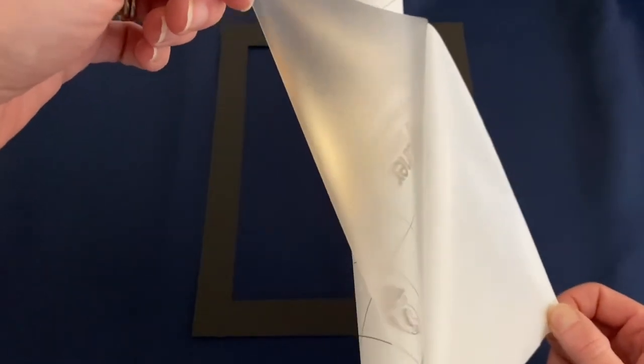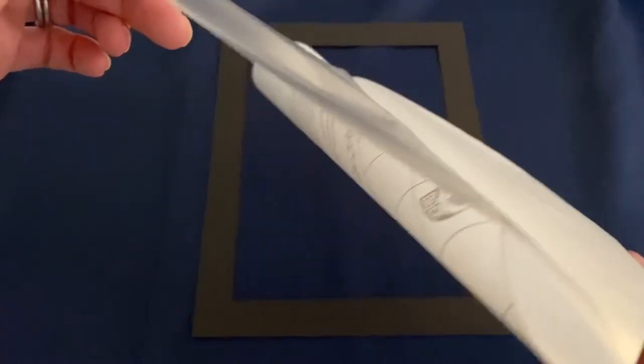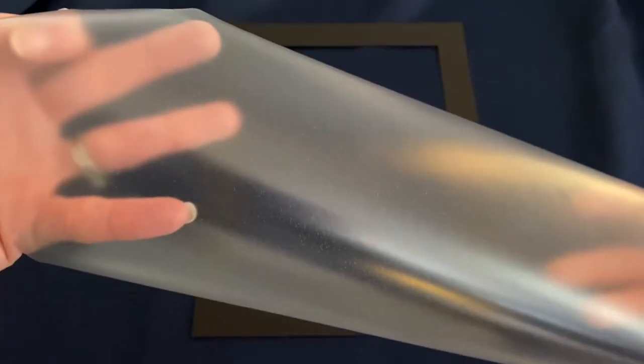Once you have this backing on it, it won't roll up as much. Go nice and slow, peel it off, and hold it up as you go so it doesn't get stuck to anything or itself. And then I've got this clear sticky sheet here.